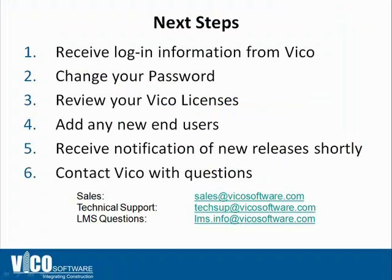Now that I've covered the basic functionality of the VICO Customer Portal, the next step would be for us to send you your login information and links to get into the customer portal site. Remember to change your password when you log in for the first time. Go ahead and go into your assigned licenses tab and review all the licenses that you own today, and add any new end users that you want to distribute those licenses to. With the imminent release of Extension 1, you will be receiving a notification shortly saying that there is a new release available. Go ahead and jump right back into your Customer Portal and distribute those new upgrades. Remember, we're always here as a resource, so reach out to us if you have any questions. Thank you.